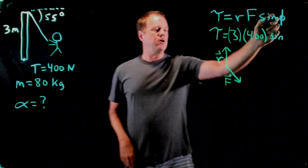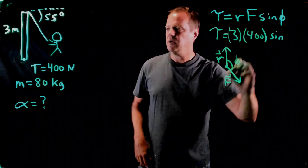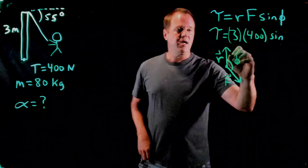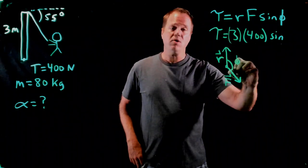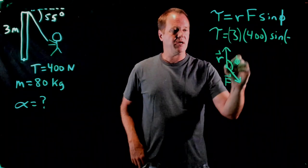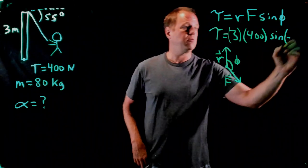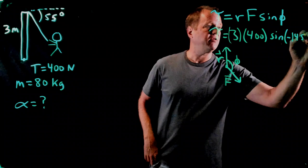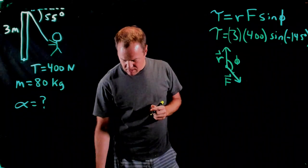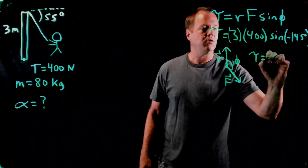So the angle that I need to put in there is this one right here. So it's not 55. In fact, it's not minus 55. I'm going from R to F clockwise. So that's going to be a negative number. And it's 90 plus 55. So negative 145 degrees. I throw that into my calculator, and it tells me the torque is minus 688 newton meters.